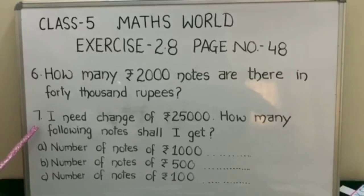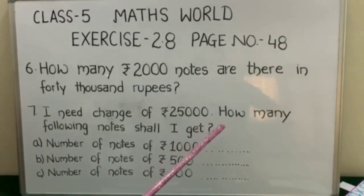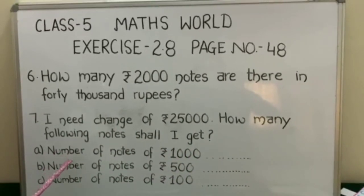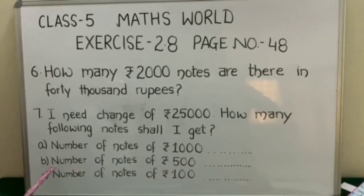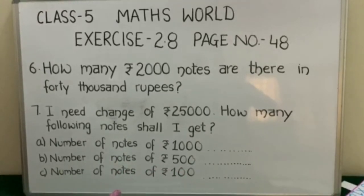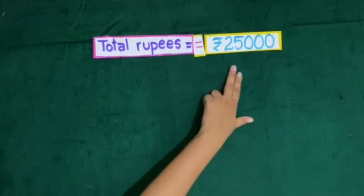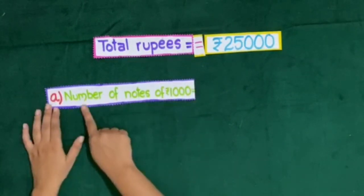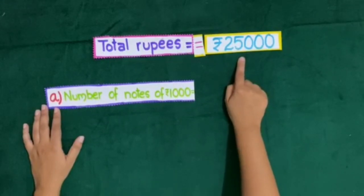Next, question number 7 is: I need change of rupees 25,000. How many of the following notes shall I get? Part A: number of notes of rupees 1000. Part B: number of notes of rupees 500. Part C: number of notes of rupees 100. Total rupees is equal to rupees 25,000. Now we will solve part A — that is number of notes of rupees 1000 in total rupees 25,000.